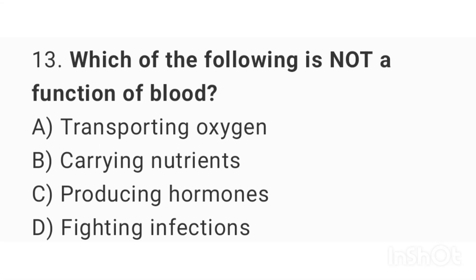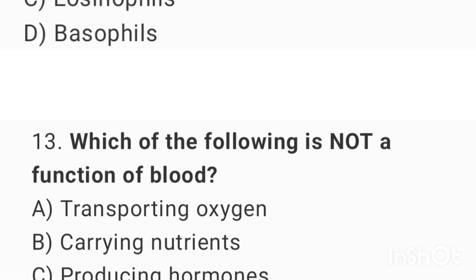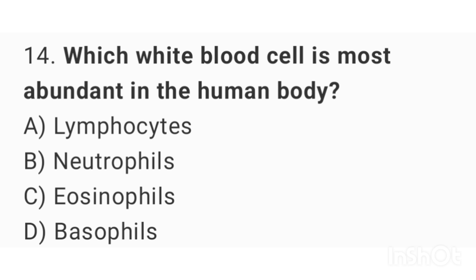Question number 13: Which of the following is not a function of blood? The right answer is option C: producing hormones. Question number 14: Which white blood cell is most abundant in the human body? The right answer is option B: neutrophils.